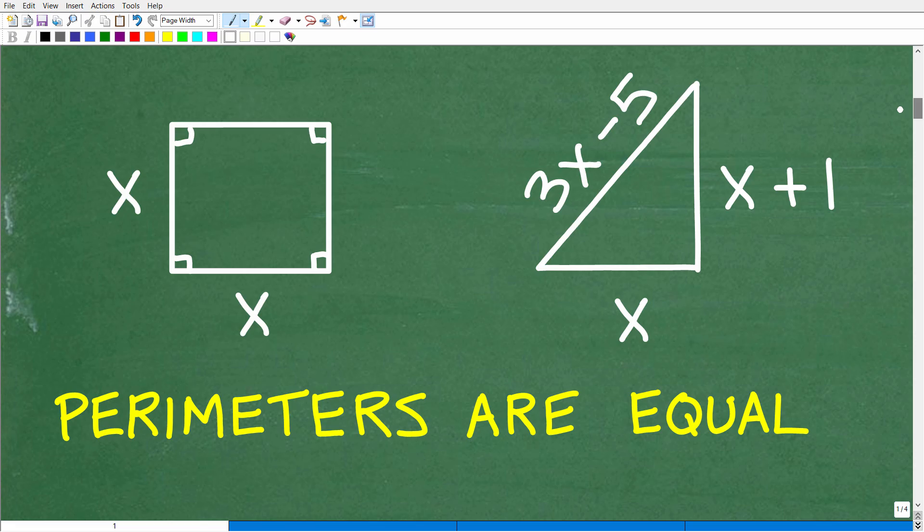Let's go ahead and get into the solution right now. This is not going to be that difficult, but the main thing is that you have to understand what the perimeter is. The perimeter is the sum distance around a figure. So what we need to do is express the perimeter of the square and the triangle algebraically. So what would be the perimeter of the square?